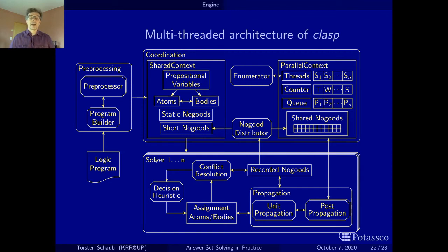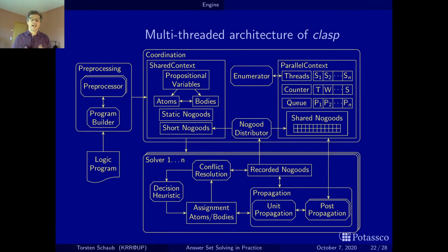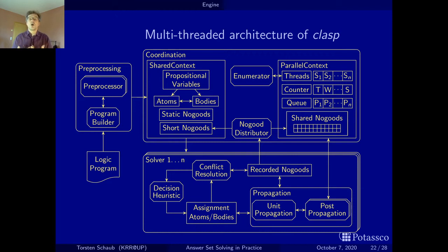Since Clasp is multi-threaded, you can have one to actually 64 Clasp instances running in parallel, though using 64 causes memory congestion, at least on the machines we use daily. The architecture and algorithms of each solver instance follow the conflict-driven constraint learning (CDCL) scheme, which has been driven to perfection in satisfiability testing but whose ideas go back to work in the 70s by Richard Stallman on intelligent backtracking. The idea is to base the whole search on the quest for conflicts and then learn from mistakes.